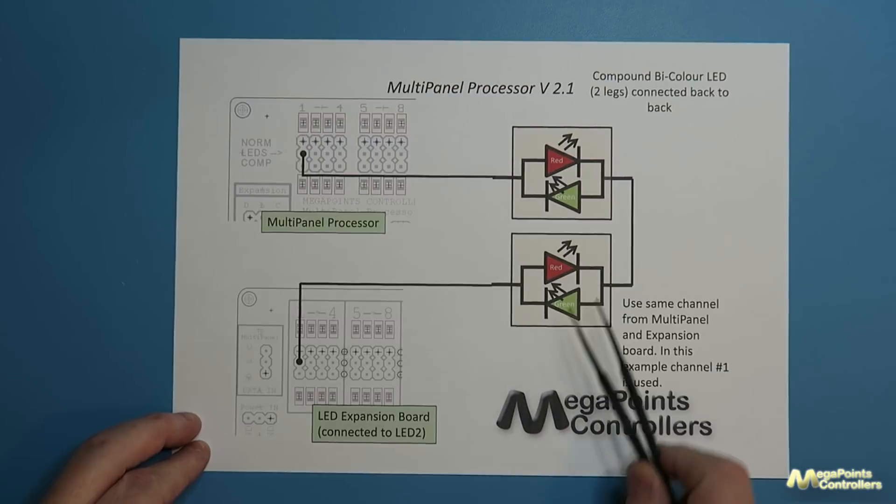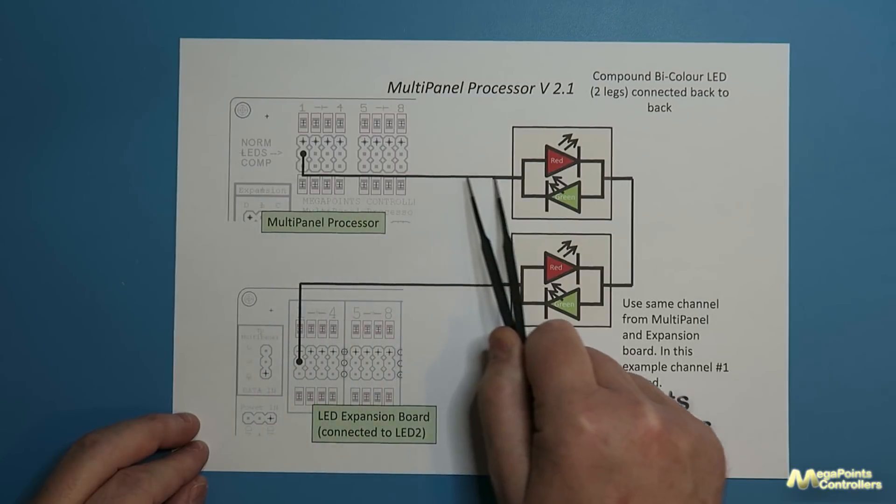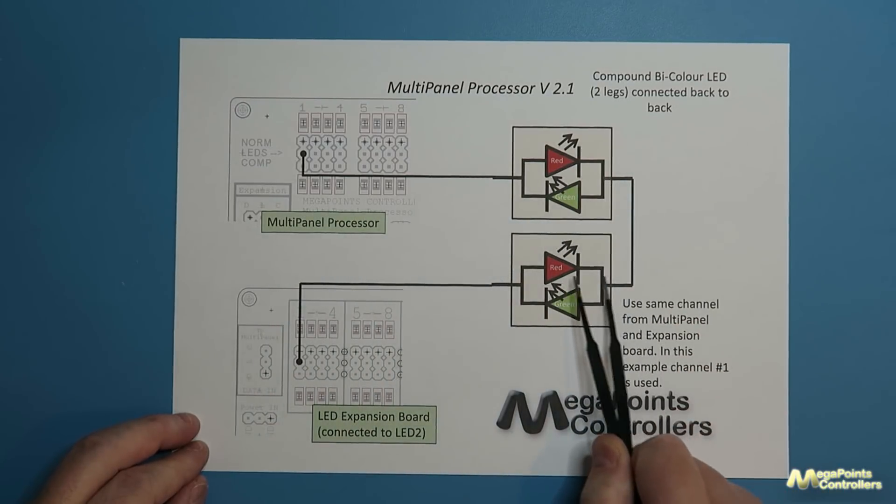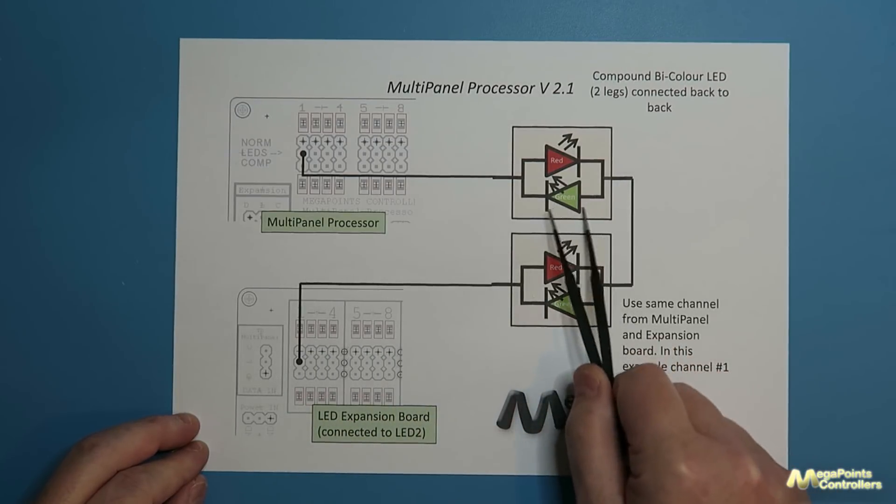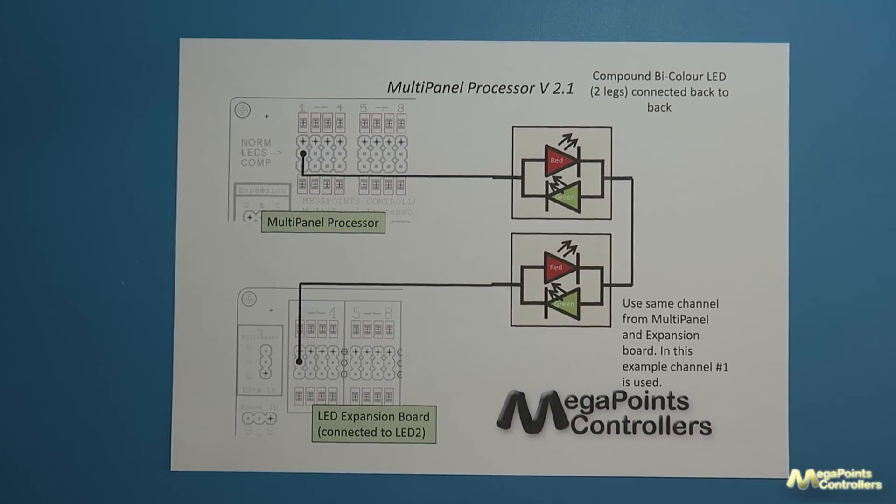So when current flows this way it might go through the red at the top and the green at the bottom but when we reverse it then it might flow this way through the red at the bottom and the green at the top.